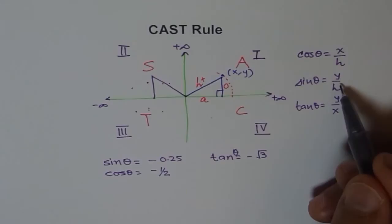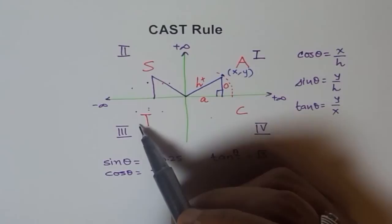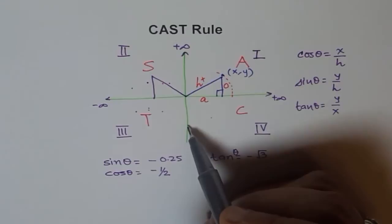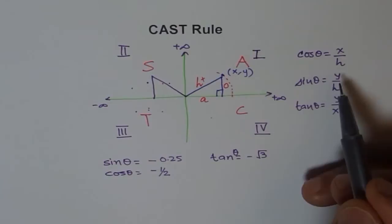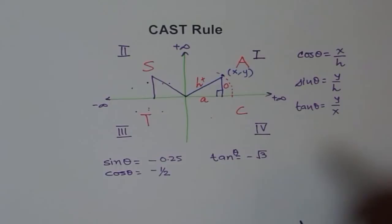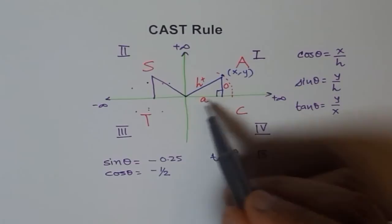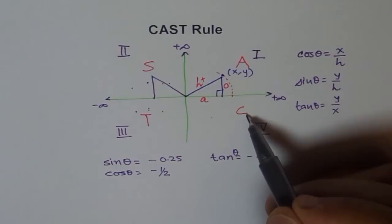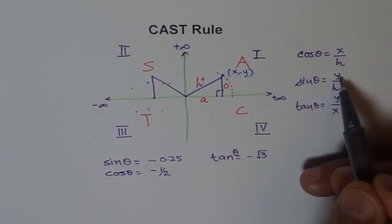As we move from quadrant 2 to 3, x is negative and y also becomes negative. If x is negative, cosine is negative. If y is negative, sine is negative. But if both are negative, negative times negative cancels out, so tangent remains positive. That is why tangent is positive in quadrant 3. In quadrant 4, x is positive but y is negative. Since x is positive, cosine is positive. Since y is negative, sine is negative, and y being negative also affects tangent — so both sine and tangent are negative in quadrant 4.